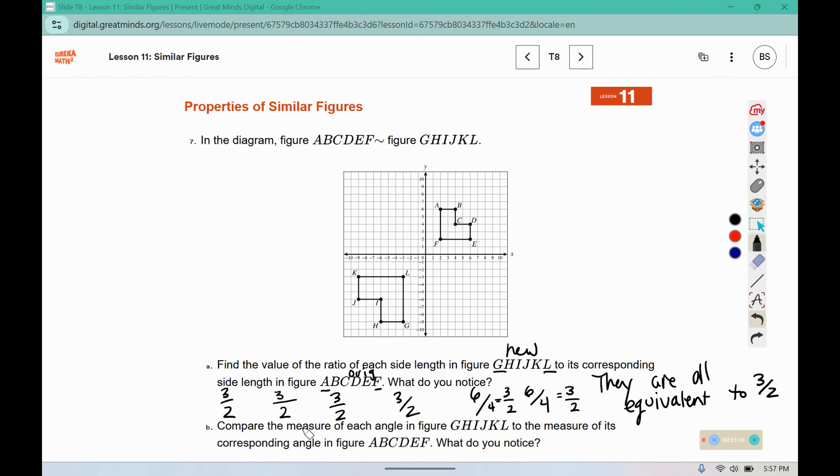Now it says compare the measure of each angle in the figure to the measure of the corresponding angle. So angle A is 90 degrees, and angle G is 90 degrees. Angle B and H correspond because those are both mentioned second. B is 90 degrees, H is 90 degrees. I and C correspond to one another.